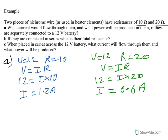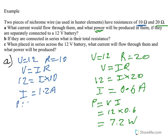Now for power — power equals V times I. For the 20 ohm wire: power = 12 × 0.6 = 7.2 watts. For the 10 ohm wire: power = 12 × 1.2 = 14.4 watts. That completes Part A.